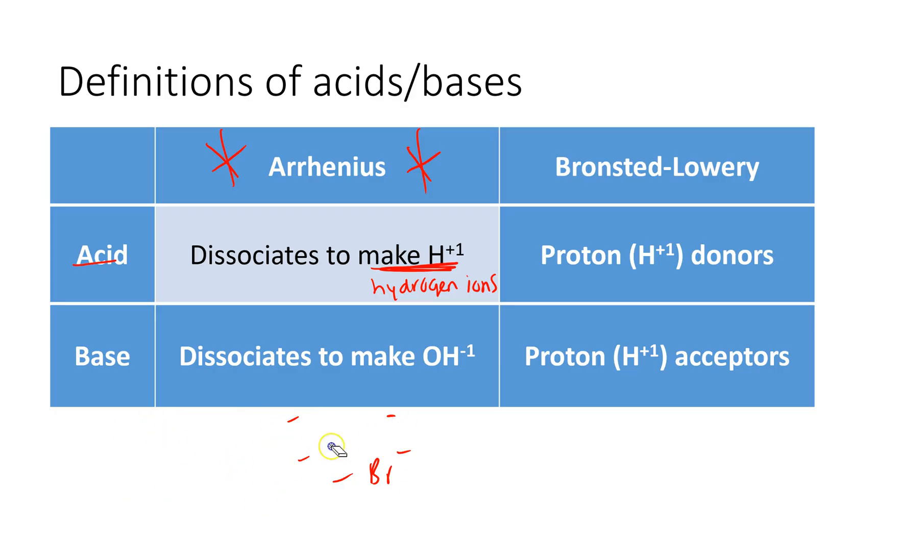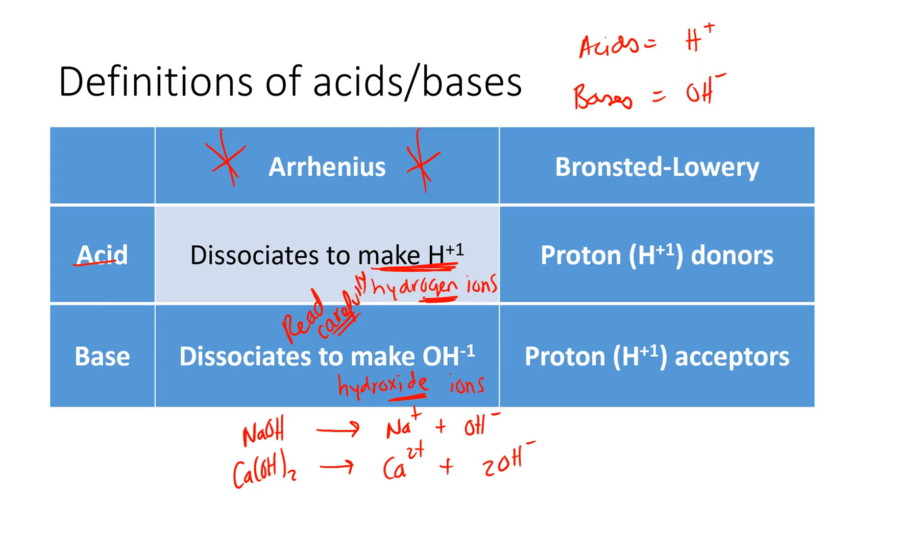So bases dissociate to make hydroxide ion, OH-. Notice how similarly spelled hydrogen and hydroxide are. You have to read carefully if this were to be a question. So bases dissociate to make OH minus. If I have NaOH, sodium hydroxide, it dissociates into sodium and hydroxide. If I have calcium hydroxide, Ca(OH)2, it's gonna dissociate into calcium and two hydroxide ions. Okay, so acids for our purpose of our class, acids are gonna have H+, bases are gonna dissociate into OH-.